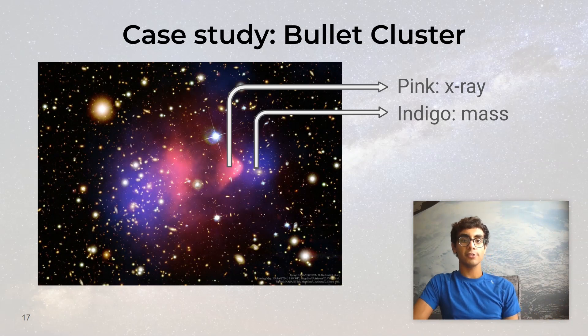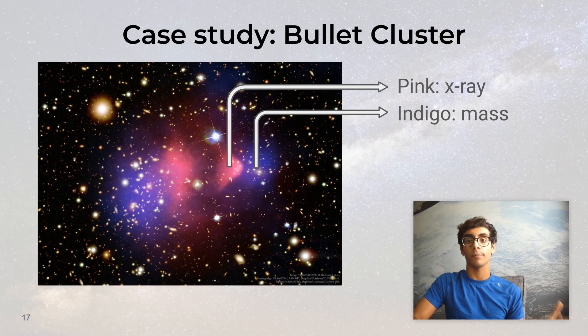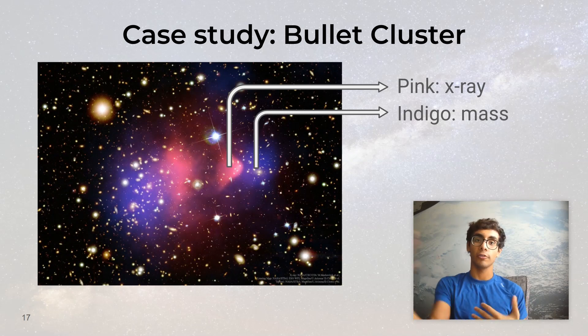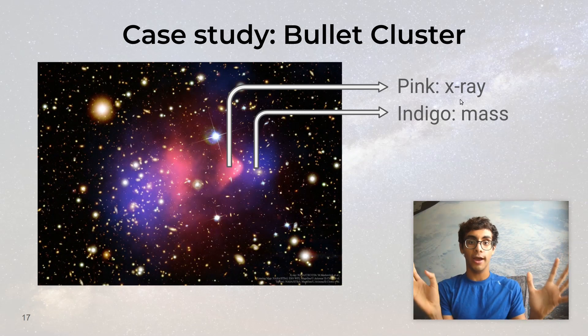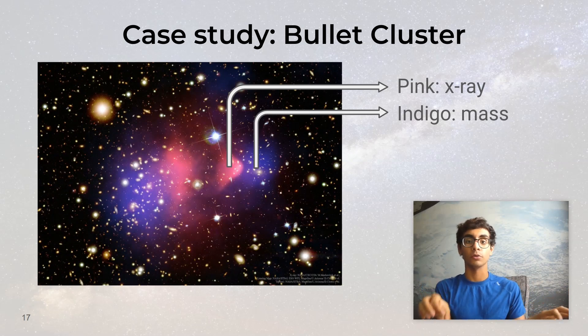The explanation is that most of the matter is particle dark matter, which passes through itself uneventfully. Because there's no friction in dark matter, it ends up further where the blue is. The remaining regular matter interacts and there's a bunch of friction, which slows it down, which is why the pink blobs are lagging behind the blue blobs.